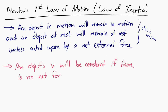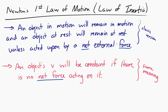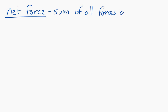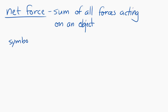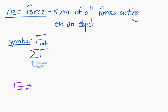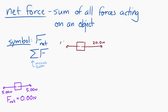Both of these definitions refer to something called a net force. A net force is the sum of all forces acting on an object, often represented as F_net or sigma F, where sigma is the summation sign meaning you're adding all the forces together. For instance, if we have an object with five newtons to the right and five newtons to the left, the net force is zero newtons. If there's 20 newtons to the right and 15 newtons to the left, the net force is five newtons to the right.